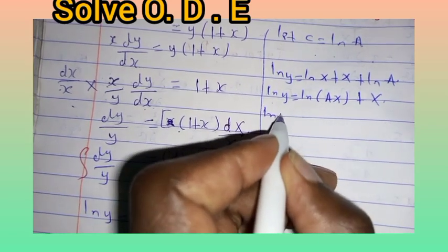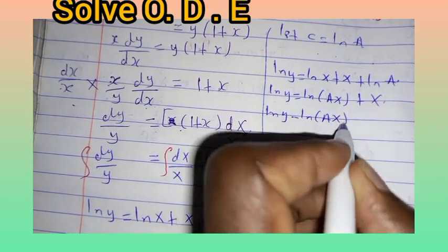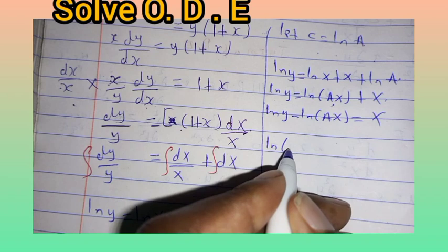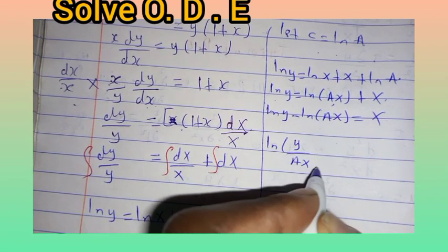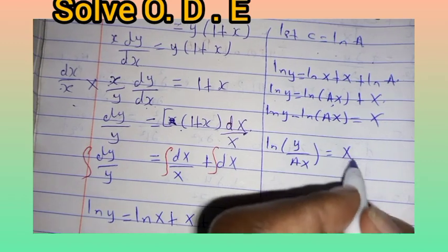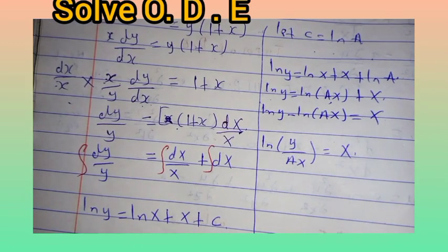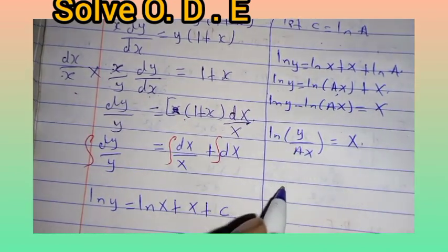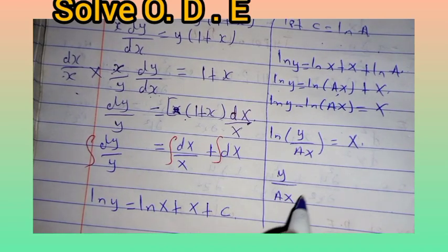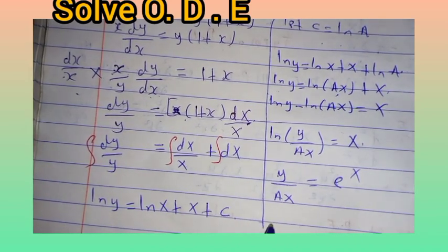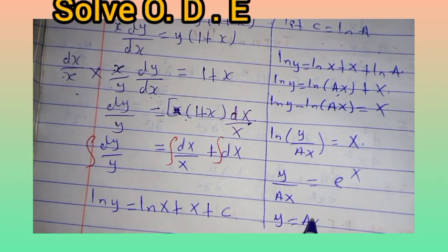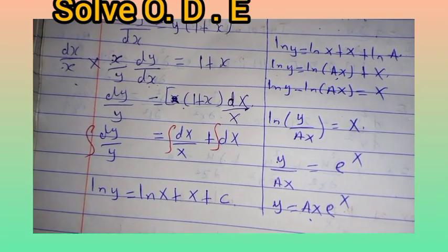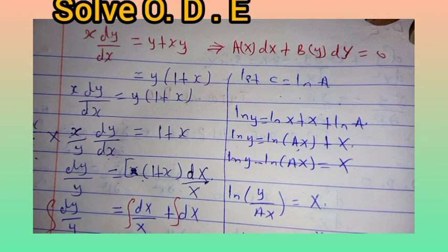Moving ln(ax) to the left side, we get ln(y) minus ln(ax) equals x, which simplifies to ln(y over ax) equals x. Taking the exponential of both sides, y over ax equals e^x, meaning y equals ax·e^x, where a is the constant of integration.